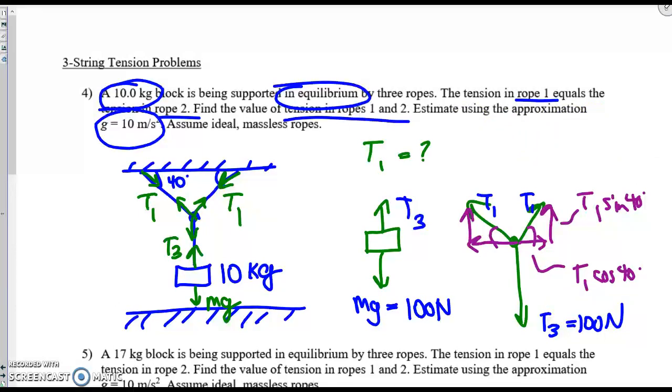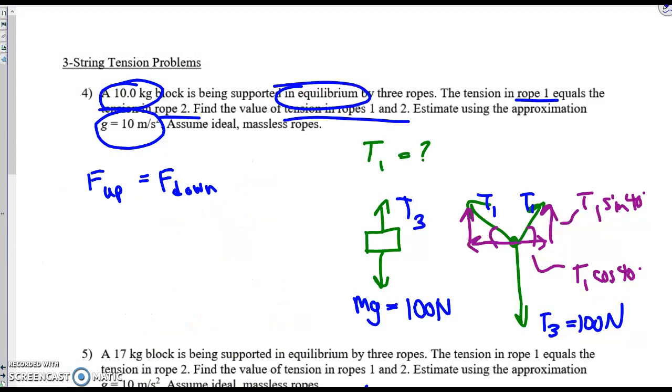Let's look instead at the y forces and balance those. I start with the up forces, balance the down. That's what this says. I look at my picture. I say, well, there's two arrows pointing up. I add the two. Each arrow is t1 sine theta. t1 sine theta. Where theta is 40. What pulls down on the knot? Mg. Well, no, wait. No, it's t3. t3, technically, which is 100.